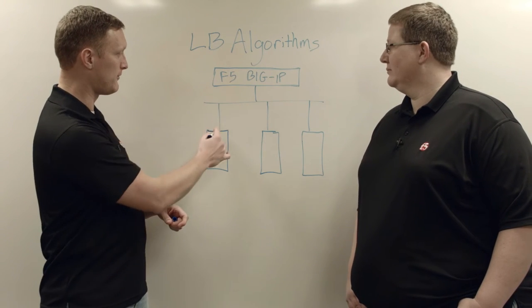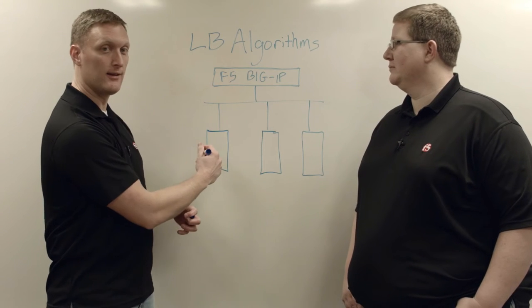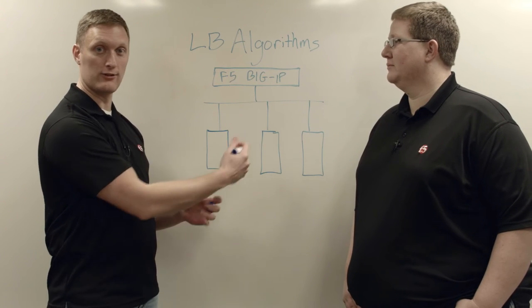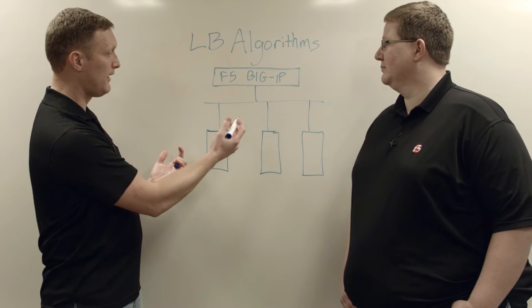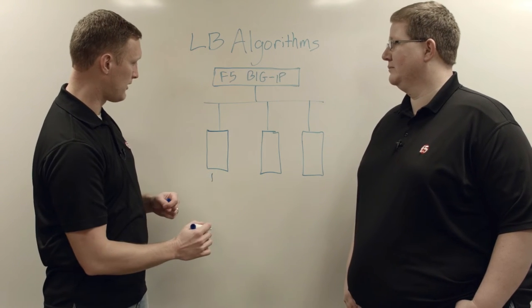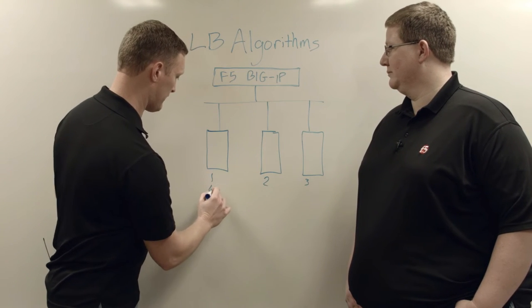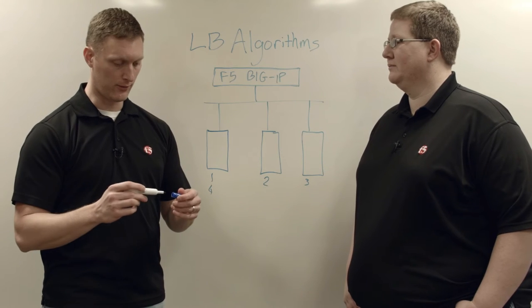As traffic comes in, the BigIP is just going to give the next connection to the next server, to the next backend server. So in this case, a connection comes in, it's going to go here to the first server, the next one, the second one's going to go here, third, fourth, fifth, you guys get the idea. So it literally is just going to round robin all the way through.